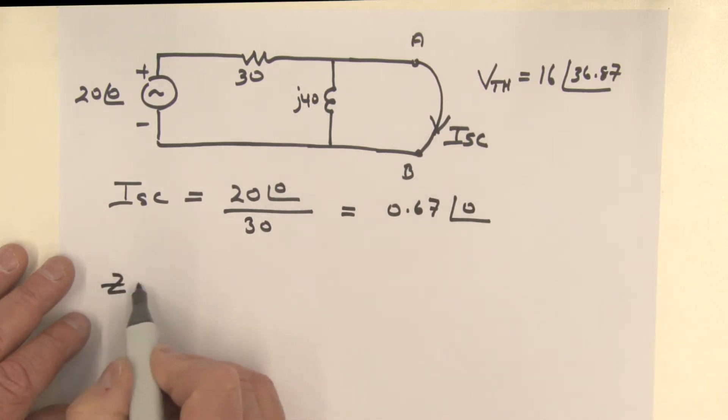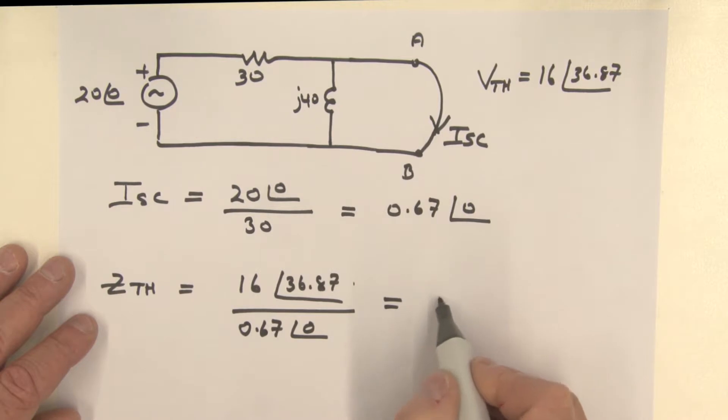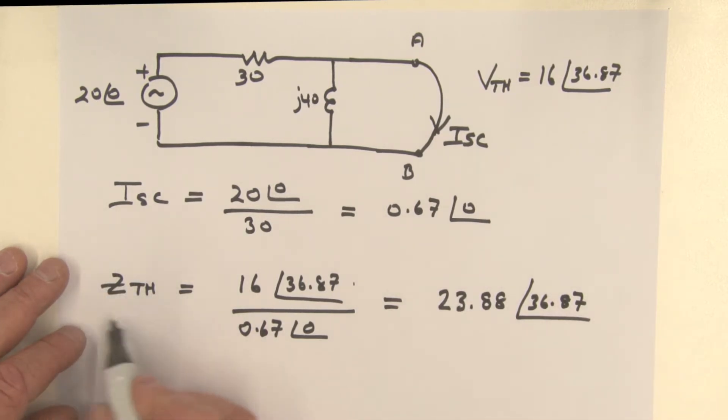Z Thevenin is equal to the Thevenin voltage, which is 16 at an angle of 36.87, divided by the short circuit current, which is 0.67 amps at an angle of zero. And if we evaluate this, it comes out to be 23.88 at an angle of 36.87. So it's a complex impedance for Z Thevenin.